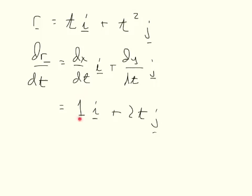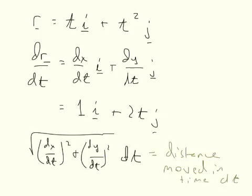This 1 came from taking the derivative of t, and this 2t came from taking the derivative of t squared because this was the function describing our x-coordinate as a function of time, and this is our y-coordinate as a function of time. And we care about the distance that we move over a chunk of time dt, and so we need to take the length of this vector.